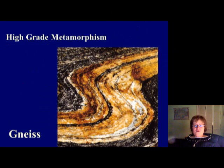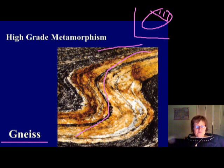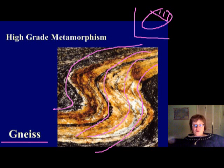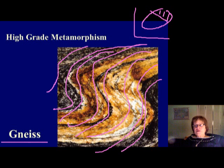The high-grade metamorphic rock is gneiss. On the PT diagram, this is at the top, closest to the igneous region. Gneiss is very similar to granite — the main difference is the mineral bands. You will have a black band of mostly biotite, a white band of mostly K-feldspar, and a band with amphiboles. The mineral composition is similar to granite, but it has this characteristic banded or gneissic texture.